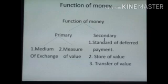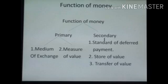Next we see about functions of money. Functions of money are classified into primary or main functions, and secondary or contingent functions. Primary functions are medium of exchange and measure of value. Medium of exchange means money is used to buy goods and services. Measure of value means all values are expressed in terms of money, and it is easier to determine the rate of exchange between various types of goods and services.